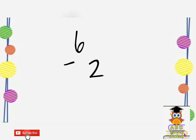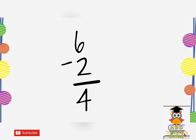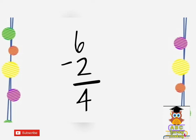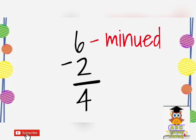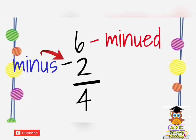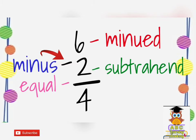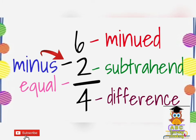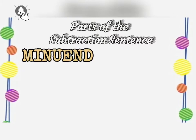For example, we have here 6 minus 2 equals 4. So in here, you have your minuend, the minus sign, your subtrahend, the equal sign, and the difference. We call these the parts of the subtraction sentence.